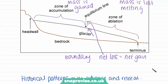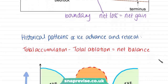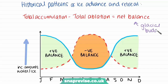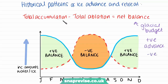Now we're going to look at the patterns of ice advance and retreat, looking at a glacier in the northern hemisphere. The glacial budget, also known as the net balance, can be referred to as total accumulation minus total ablation. If the net balance is a positive number, the glacier is in advance. If it is negative — meaning total ablation is greater than total accumulation — our glacier is in retreat.